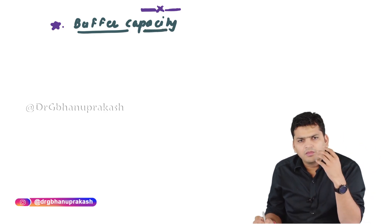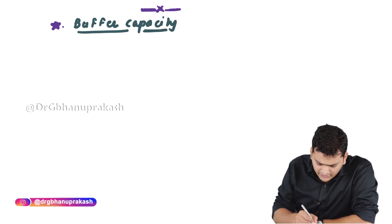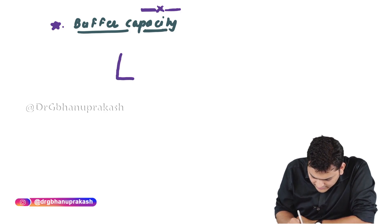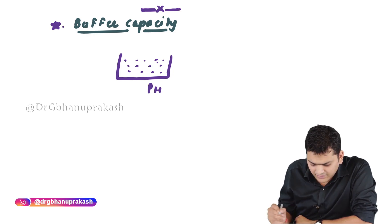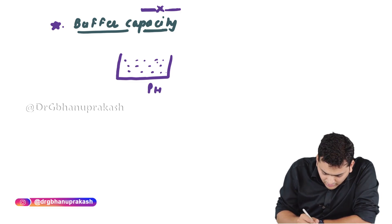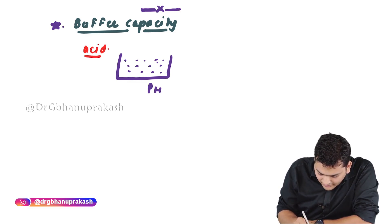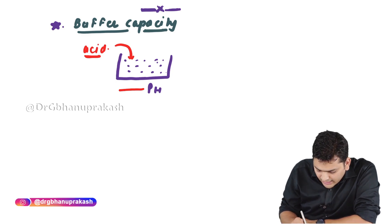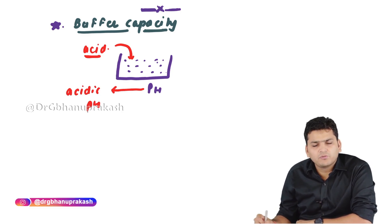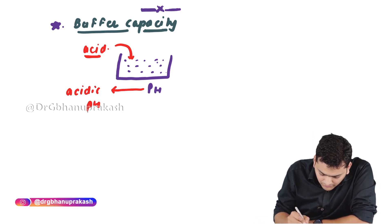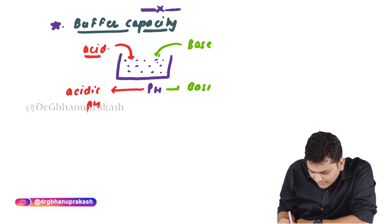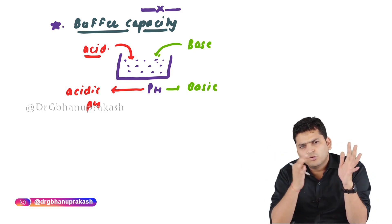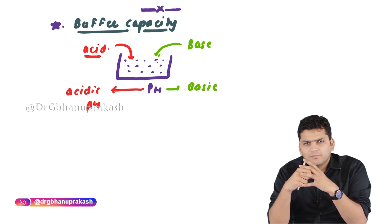What is the meaning of buffer capacity? If I take a solution, it will have a specific pH. If I add acid, the pH will shift towards the acidic side. If I add base, the pH will shift towards the basic side.